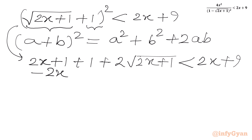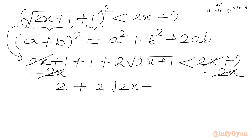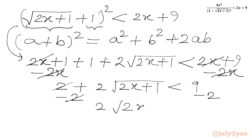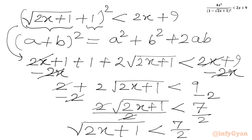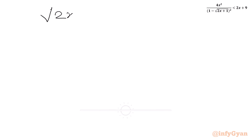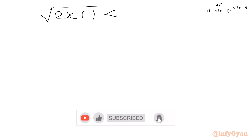Subtracting 2x from both sides, the 2x terms cancel, giving 2 + 2√(2x+1) < 9. Subtracting 2 from both sides: 2√(2x+1) < 7. Dividing both sides by 2: √(2x+1) < 7/2.